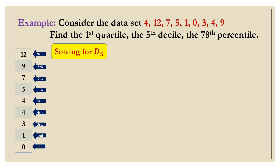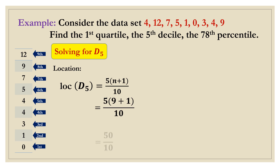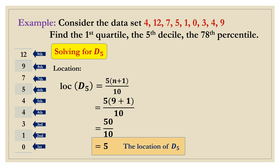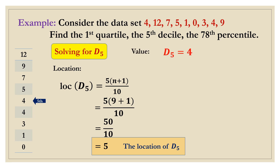Now, let's solve for D5. Location of D5 is equal to 5 times n plus 1, all over 10. N is 9. Therefore, we will have 5 times 10 divided by 10, which is 5. 5 is the location of D5, meaning it is the fifth location. There is no decimal. Therefore, we obtain automatically the fifth location value, which is 4. So, D5 is therefore 4.